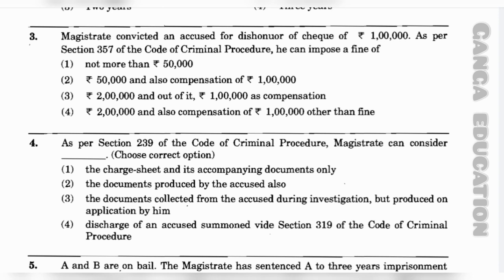Question number 3: A magistrate convicted an accused for dishonour of cheque of rupees one lakh. As per Section 357 of the Code of Criminal Procedure, he can impose a fine of: option 1 — not more than rupees 50,000; option 2 — rupees 50,000 and also compensation of rupees one lakh; option 3 — rupees two lakh and out of it rupees one lakh is compensation; option 4 — rupees two lakh and also compensation of rupees one lakh other than fine. The correct answer is option 3 — rupees two lakh and out of it rupees one lakh as compensation.